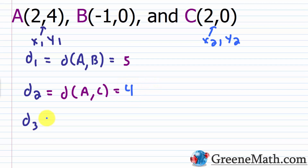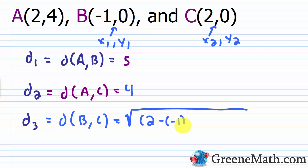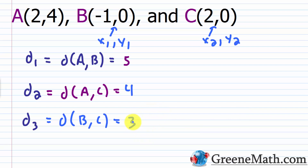For distance 3, the distance between B and C: x₂ = 2, x₁ = −1, so 2 − (−1) = 3, squared is 9. Then y₂ = 0, y₁ = 0, so 0 − 0 = 0, squared is 0. The square root of 9 is 3. The largest number is 5, so that would be the hypotenuse if this is a right triangle, and 3 and 4 would be the shorter sides, the legs.